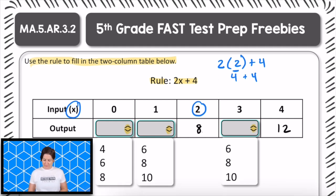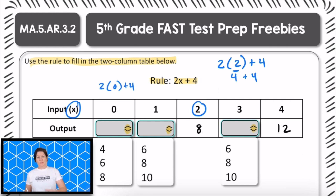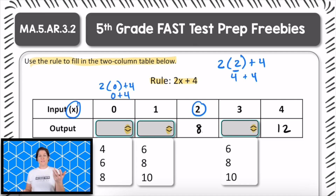If we have an input of 0, that would be 2 times 0 plus 4. 2 times 0 is 0. And 0 plus 4 is 4. So when we drop down that menu, we would select 4.